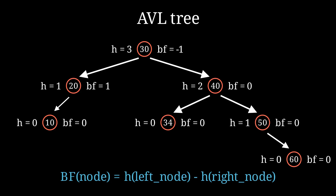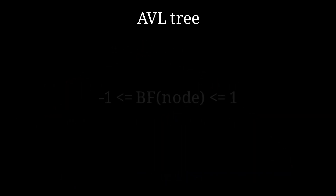Here are all the nodes labeled with their balance factors. Note that for the node with value 20, since there is no right child, we take the height of the right node as minus 1. A tree is balanced when all its balance factors are either minus 1, 0, or 1.